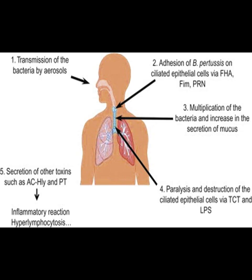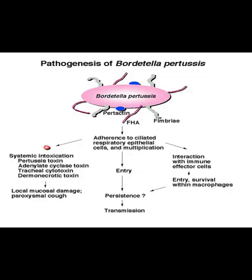The pathogenesis: transmission via airborne aerosols, then adhesion and multiplication of bacteria. The ciliated epithelium is involved, then secretion occurs and it produces bouts of cough. The adhesins — filamentous hemagglutinin, fimbriae, and pertactin — all three mediate adherence to the ciliated epithelium.